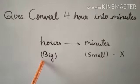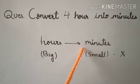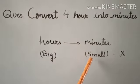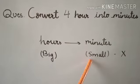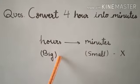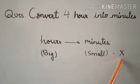Hours is a big unit compared to minutes. Whenever we convert a big unit to a small unit, we multiply.